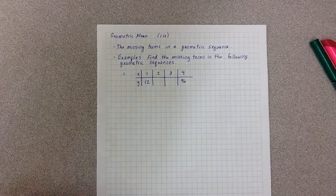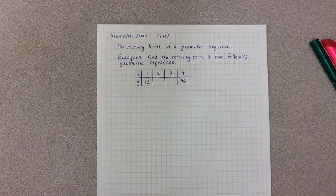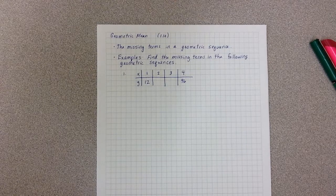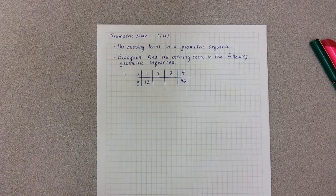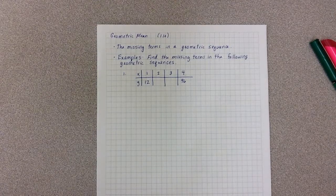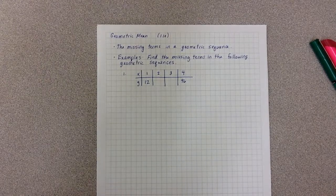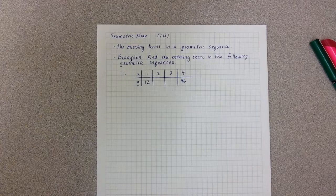These notes are on the geometric mean, which is the topic you explored in 1.10. Geometric mean is the missing terms in a geometric sequence. We'll do a couple examples.